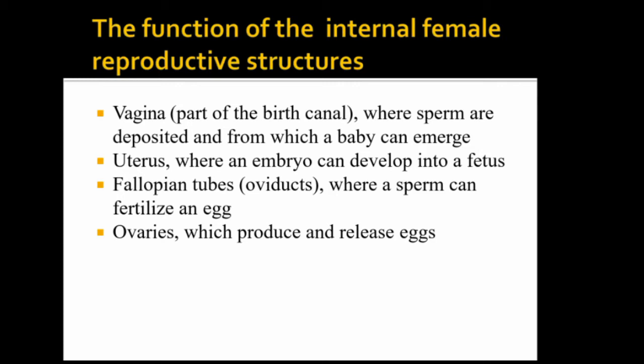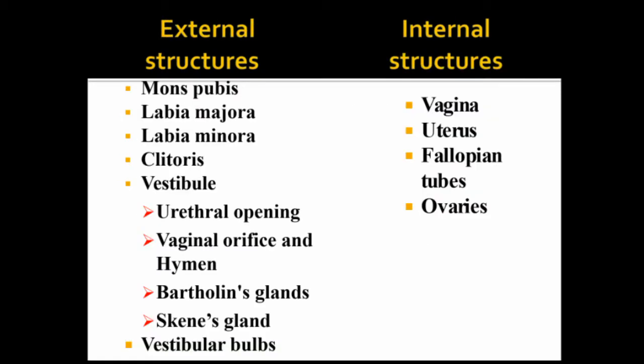The vagina is the birth canal and the first part through which sperm travels. The uterus functions to house the embryo and fetus. The fallopian tube is where fertilization of the sperm occurs. The ovaries produce and release eggs.